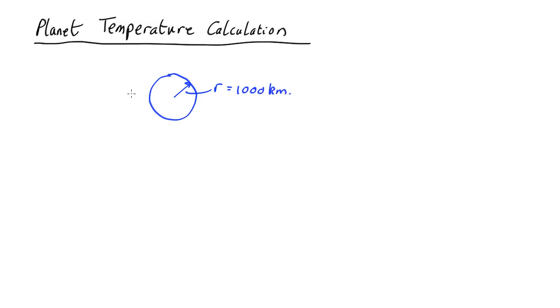And right now it's sitting a distance of two astronomical units from a star, which has a luminosity of a little bit more than the sun, 5 by 10 to the 26 watts. The question is how hot is the surface of this spaceship going to be?